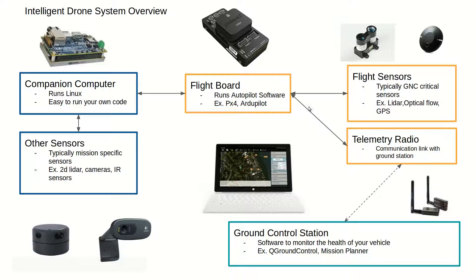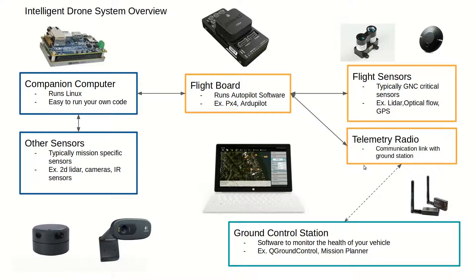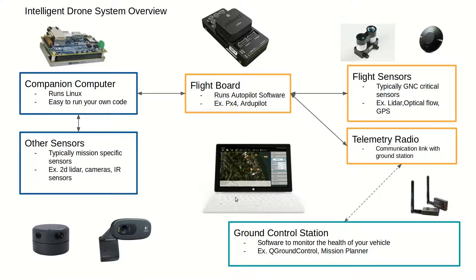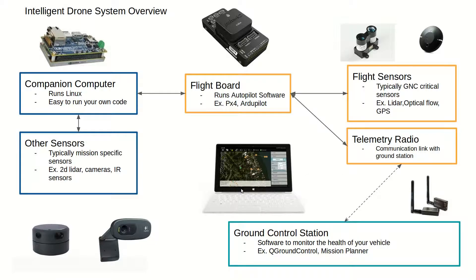The next piece of hardware that you add to your drone is a telemetry radio, and the telemetry radio allows you to communicate with a laptop on the ground so that you can see the telemetry of the drone. This laptop typically runs a piece of software called a ground control station, and this will display that telemetry nicely for you so that you can see what the drone is doing and make sure that it's doing what it's supposed to, and if it's not, then you can go ahead and intervene.